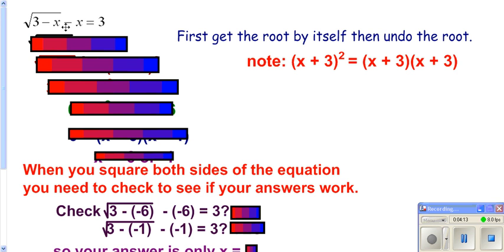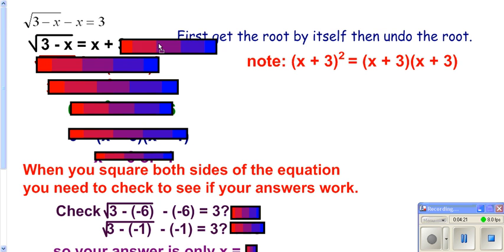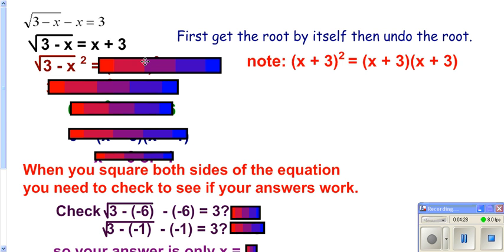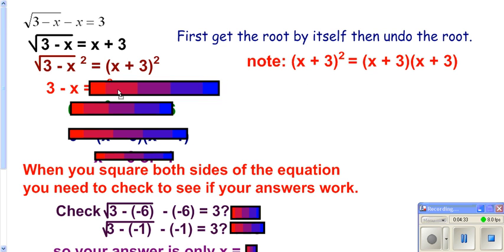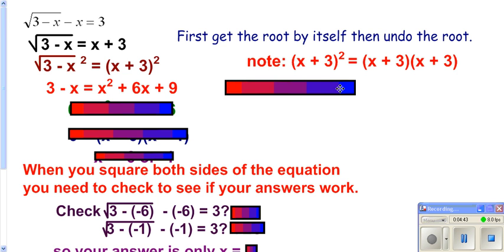When solving equations where your variable is underneath a root, you want to get your root by itself. So take your x to the other side by adding x to both sides. Then undo the root by squaring the left side — and if you square the left side, you have to square the right side. On the left, squaring undoes the root. On the right, you cannot apply the square to each term when there's a plus or minus inside, so you have to multiply it out — FOIL x plus 3 times x plus 3, and you get this.